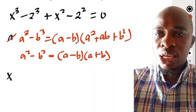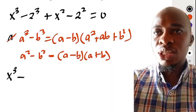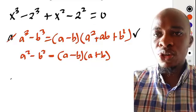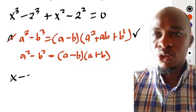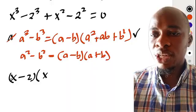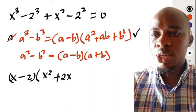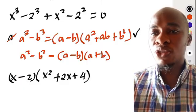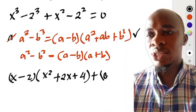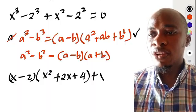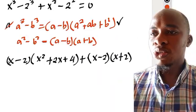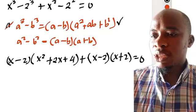From there, we're going to rewrite x to the power of 3 minus 2 to the power of 3 in that form, giving us x minus 2 into bracket x squared plus 2x plus 4, because 2 squared gives us 4. Then we also have x squared minus 2 squared written as x minus 2 times x plus 2. Everything equals 0.